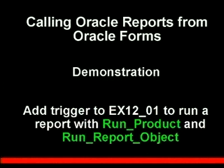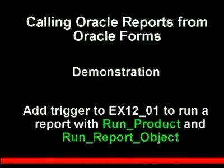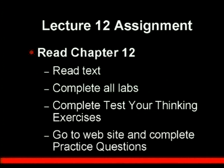It's also important to remember there are methods to change the properties of the report object in the form — for instance, giving users a choice to send to the printer or create an Acrobat file. The accompanying demonstration for this lecture covers adding a trigger to report file EX1201 to run a report. You don't need to know how to make a report right now; reports are included on the CD. We'll show the difference between run_product and run_report_object, then you'll complete the assignment and labs to get a firm understanding before moving on to the final chapter 13 on menus.